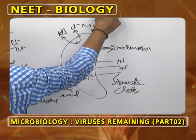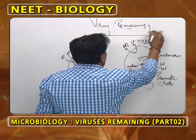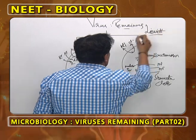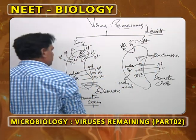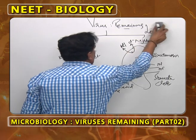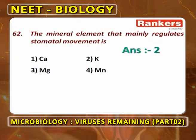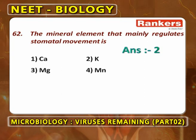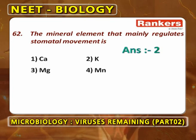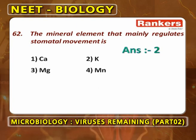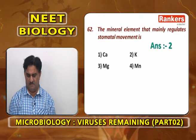This stomatal control by potassium ion was proposed by Leavitt and proved by Bowling. The mineral element that mainly regulates stomatal movement is potassium ion — not calcium, magnesium, or manganese.